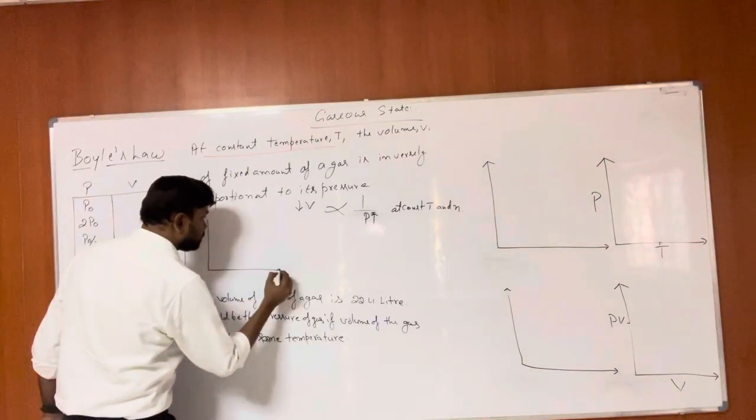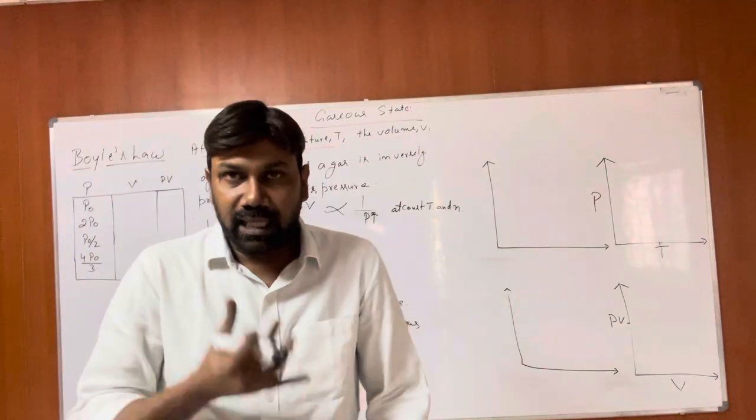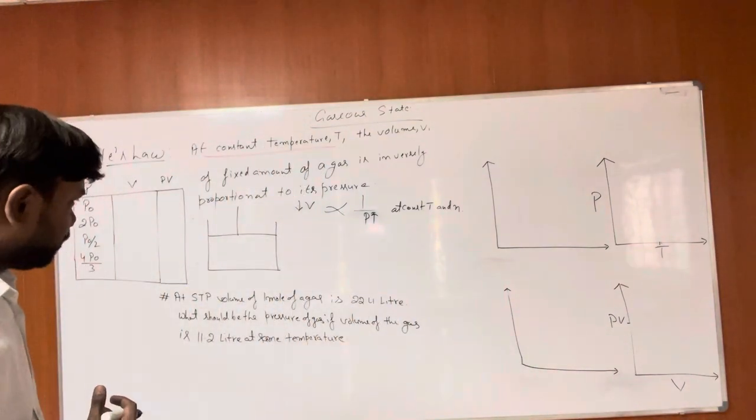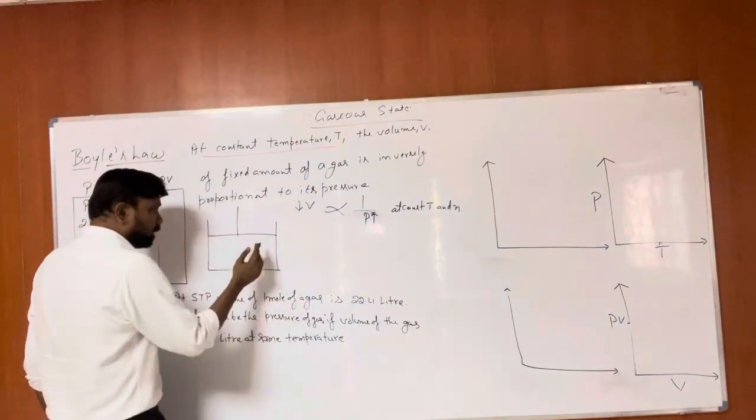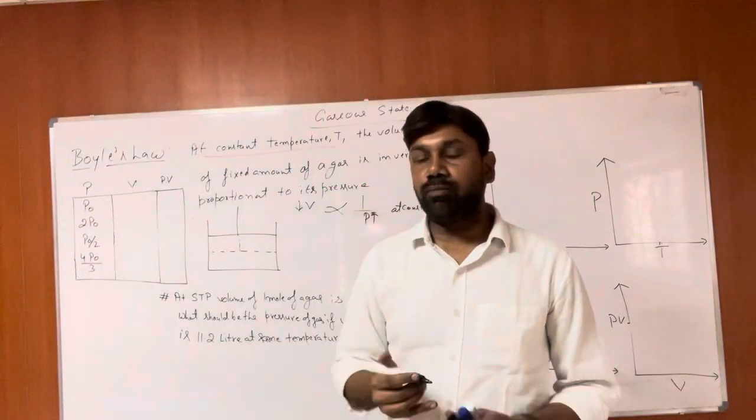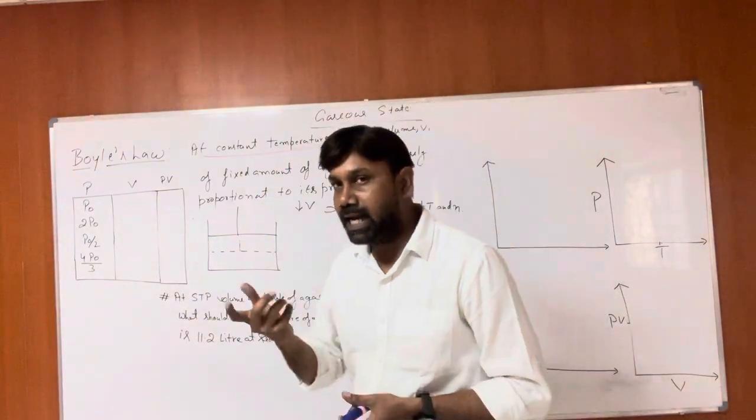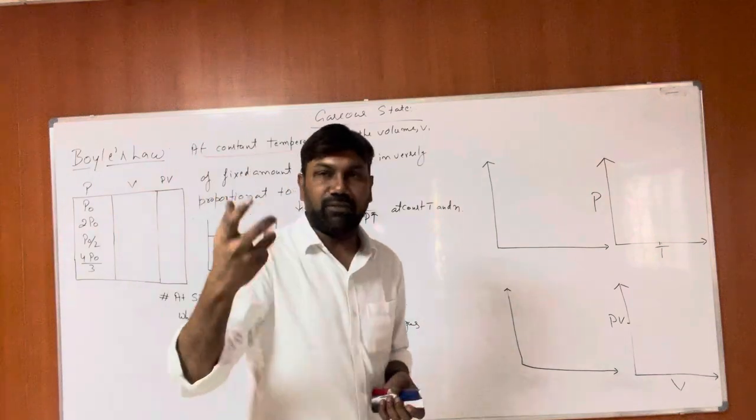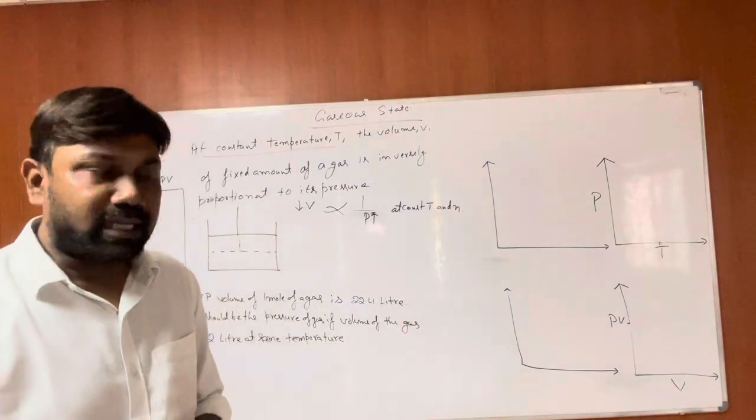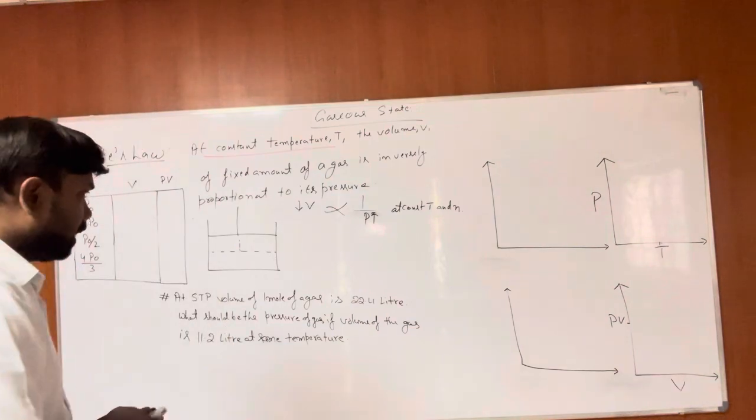So why is this happening? Gas pressure is due to molecular collisions with container walls. If we increase the volume, the space increases, so collisions per unit area decrease and pressure decreases. If we decrease the volume, collisions increase and pressure inside the gas will increase. This is explained by Boyle's law.